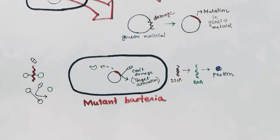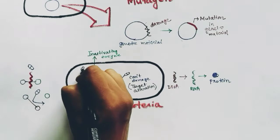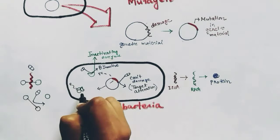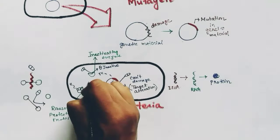This mutant bacteria can give rise to a protein which is an inactivating enzyme that can inactivate an antibiotic. The mutant gene can also code for proteins which can protect the ribosome of the bacteria — called ribosomal protection protein — which will bind to the antibiotic so that it cannot bind to the ribosome.